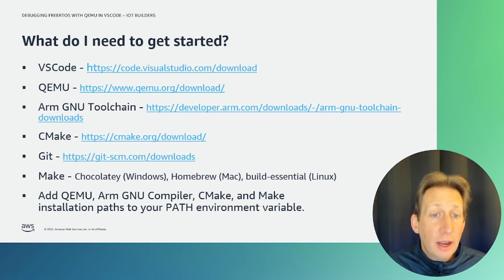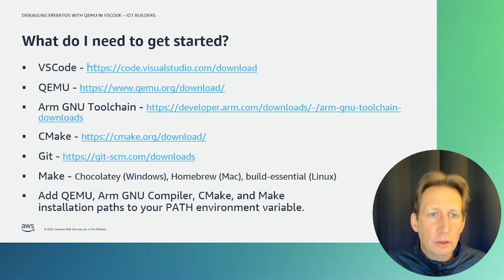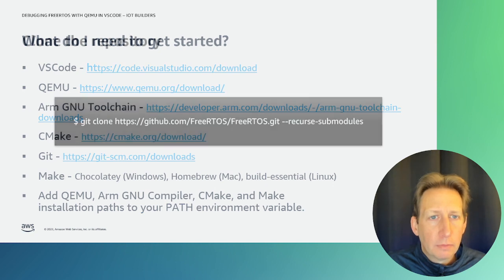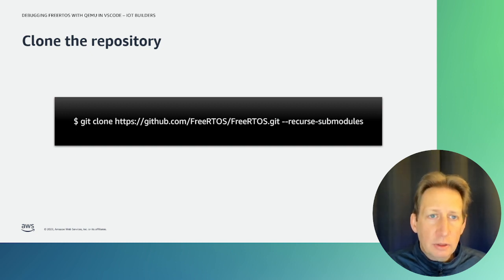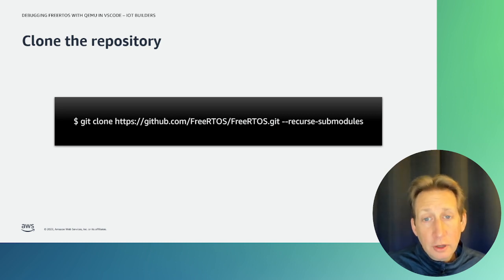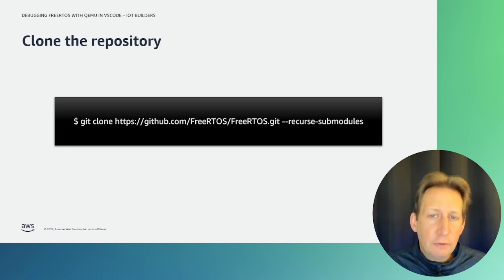Finally, we need to add QEMU, the ARM GNU compiler, CMake, and Make installation paths to the path environment variable. Each OS has a different way to do that. Once the tools are installed and added to your path, the last thing we need to do is clone the repository. We're going to clone the FreeRTOS FreeRTOS repository as part of the FreeRTOS organization, and be sure to add the flag RecurseSubModules so that you get everything in the repository.